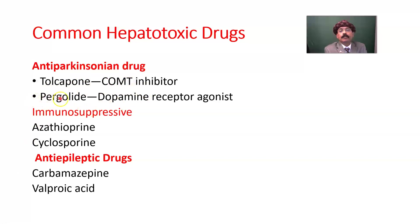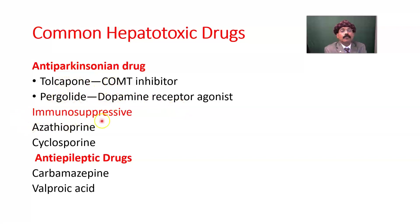Inhalation anesthetics like desflurane, isoflurane, and halothane may all cause liver damage and hepatotoxicity. Anti-Parkinsonian drugs like tolcapone (a COMT inhibitor) and pergolide (a dopamine receptor agonist) are also potentially hepatotoxic. Immunosuppressive drugs like azathioprine and cyclosporine are potentially hepatotoxic to a certain percentage of the population, depending on liver function.